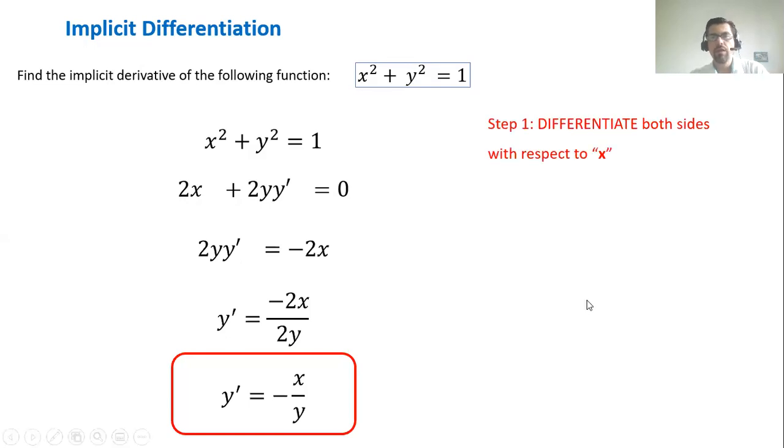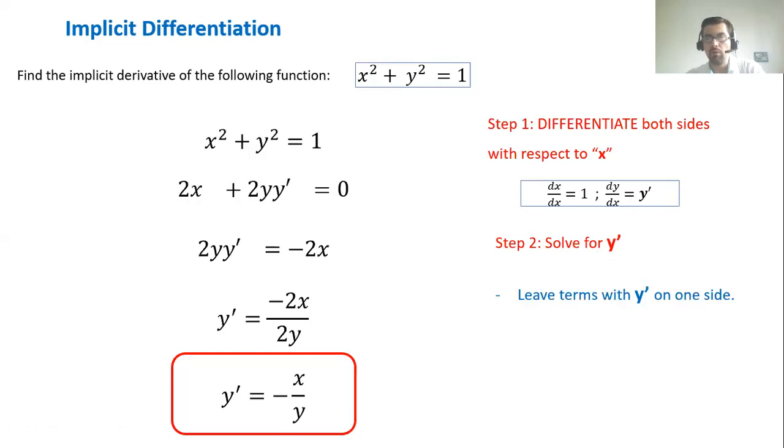Let's review the process. Step one, differentiate both sides with respect to x. When you have the derivative of y with respect to x, you have y prime. Then you solve for y prime. Leave the terms of y prime on one side. If you have to factor, you factor. You divide and you're done.